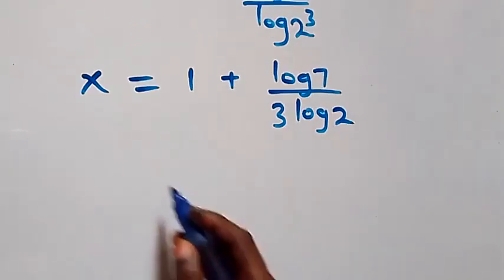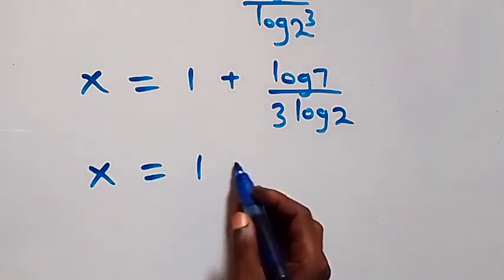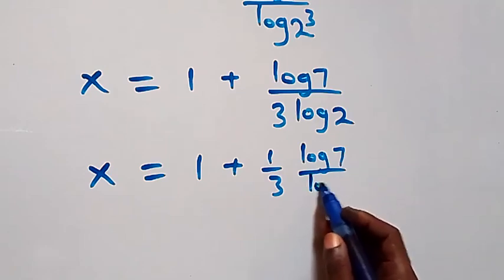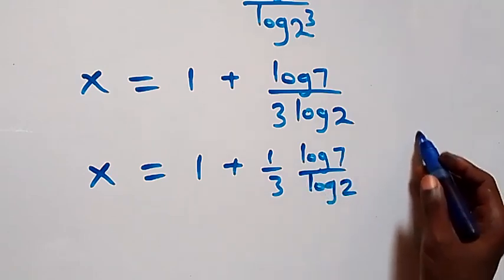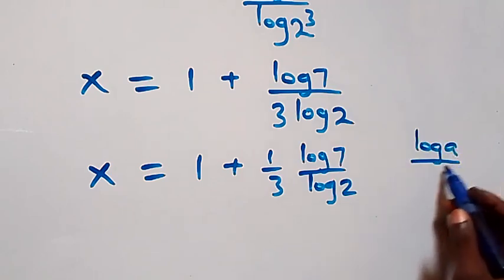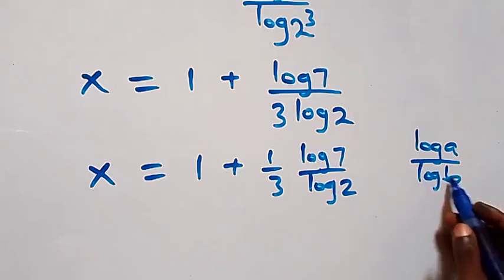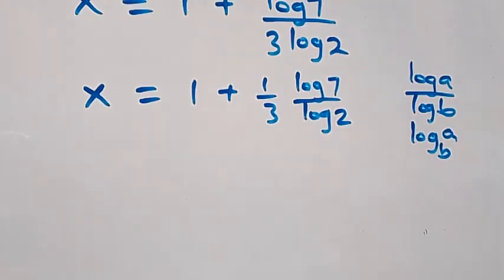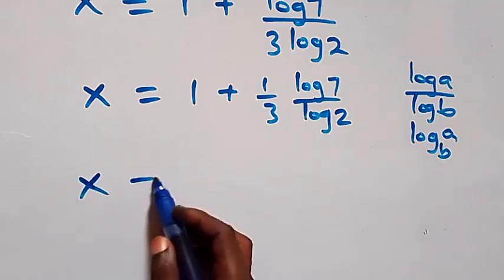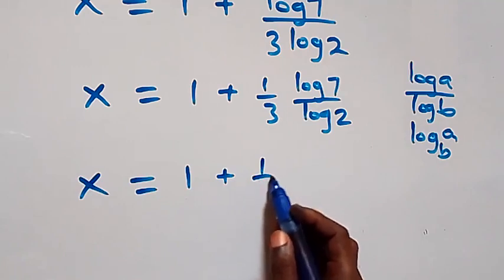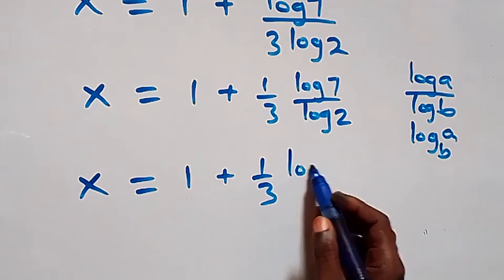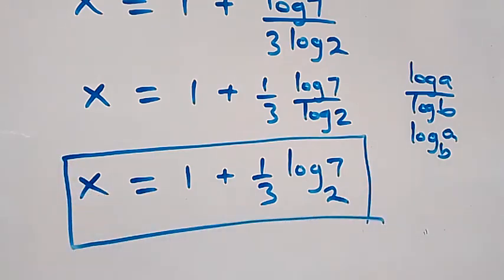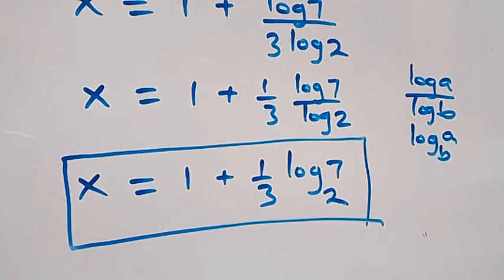Separating the terms, we have x equals 1 plus one-third times log 7 over log 2. Applying the change of base formula — log a over log b equals log base b of a — we have x equals 1 plus one-third times log base 2 of 7.